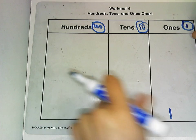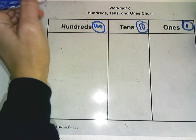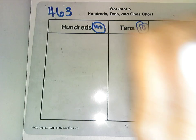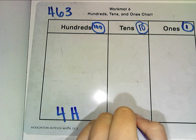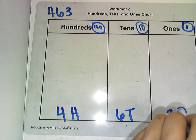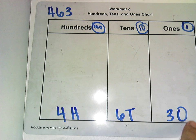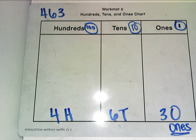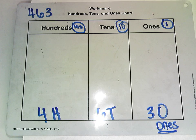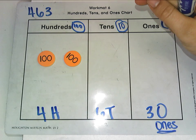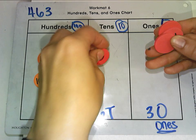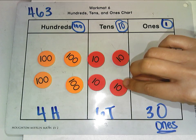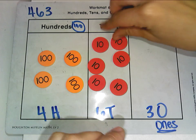Let's try a new number: 463. I need the unit form — four 100's, six 10's, three 1's. H is for 100's, T is for 10's, and that's an O for 1's, not a zero. Just like before, I'm going to get four groups of 100 — 100, 200, 300, 400 — then six 10's — counting 1 through 6 — and then my three 1's.